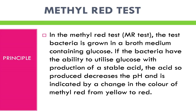The Methyl Red test detects the production of sufficient acid during fermentation of glucose such that the pH of a broth culture is sustained below about 4.5, indicated by the color of the methyl red indicator added at the end of incubation. Clark and Lubs developed the MRVP broth, which allows both the MR and VP tests to be performed from the same inoculated medium by aliquoting portions to different tubes.